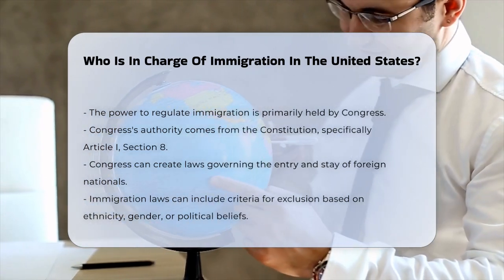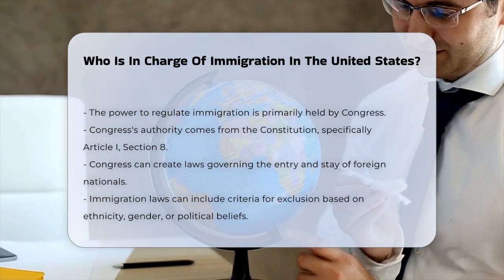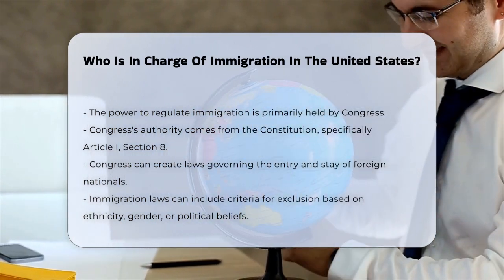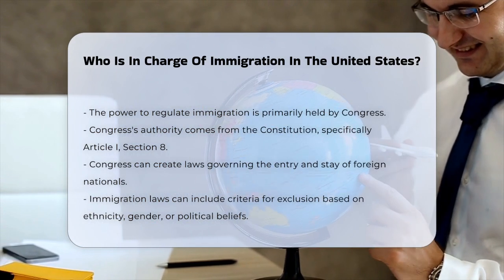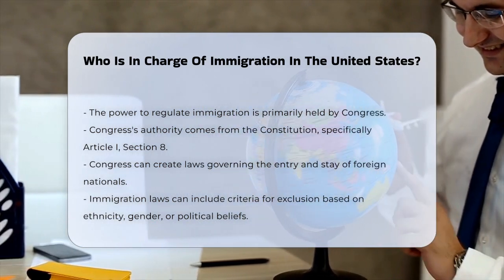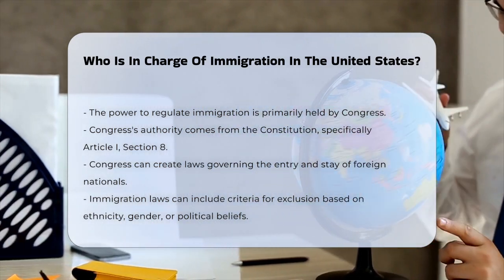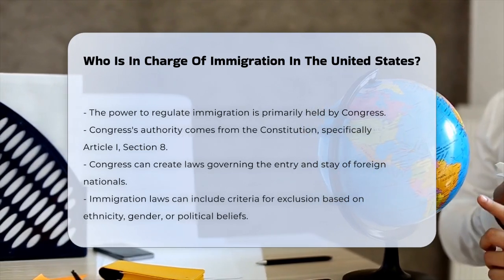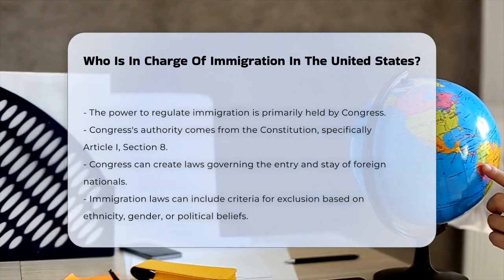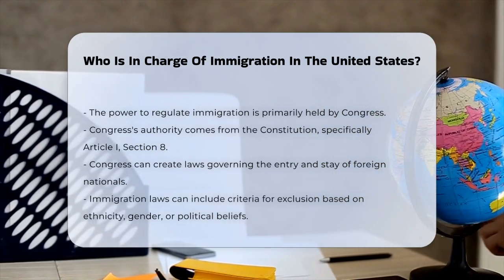The power to regulate immigration is largely held by Congress. According to the Constitution, Congress has the authority to make all laws necessary for carrying out its powers, including those related to immigration. This is based on Article 1, Section 8, which gives Congress broad powers to regulate various aspects of the country, including naturalization and foreign commerce.